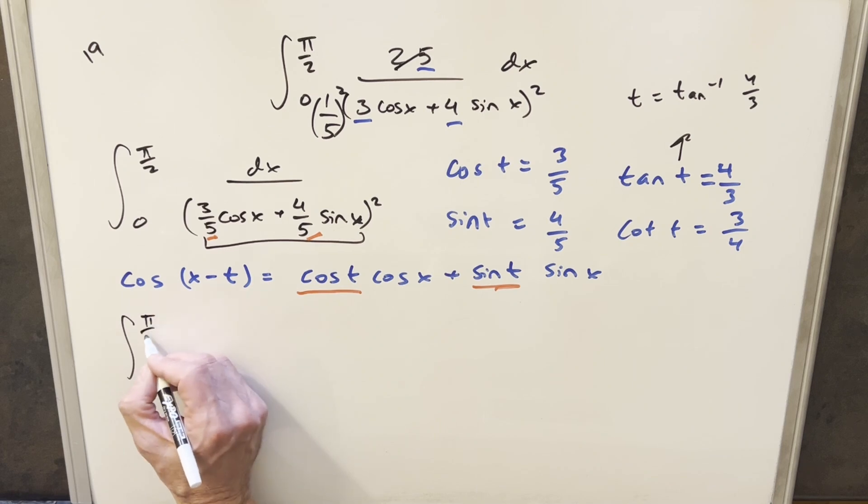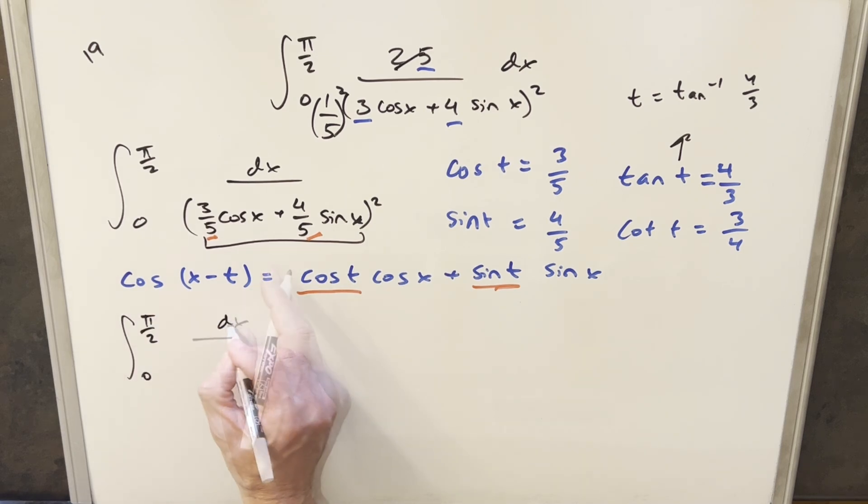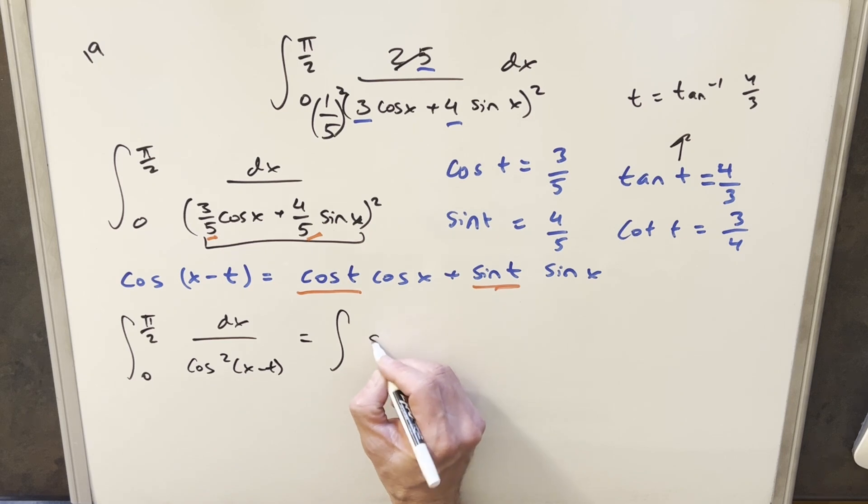Okay, so doing that, we'll just rewrite this. We're integrating from 0 to pi over 2. And then this denominator is just going to become cosine squared of this thing, which is just x minus t. But for 1 over cosine squared x minus t, I can actually write this as secant squared x minus t.